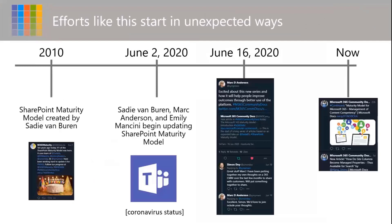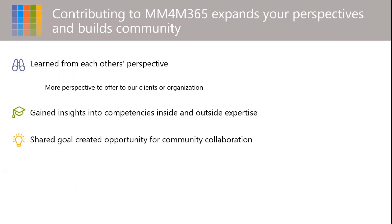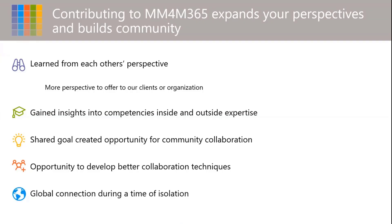Efforts like this can start in really unexpected ways. Sadie Van Buren kicked it off in 2010 with the SharePoint maturity model. Mark and I joined Sadie's efforts in June this year to update it to reflect changes in Microsoft 365. Sometimes all it takes is a tweet — Mark sent one mid-June, which Simon Doyle and Simon Hudson saw, and this initiative aligned with something they were already thinking about, so it was an excellent opportunity to begin collaborations. Twitter is an excellent way to find new collaborators with diverse perspectives. Throughout this initiative we've learned from each other's perspectives, gained insights into competencies we may be less familiar with, and stretched our thinking. Having this shared goal offered us the opportunity to develop better collaboration techniques and connect across the globe during a time of isolation, as the typical networking and knowledge-sharing conversations at conferences has not really been possible this year.